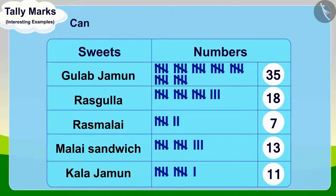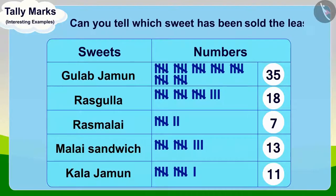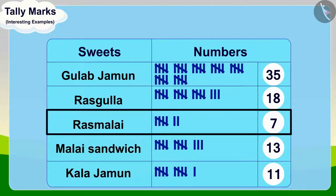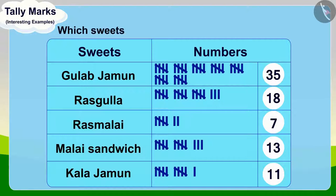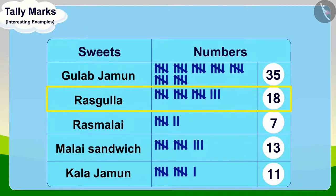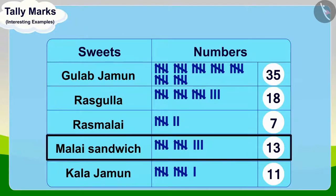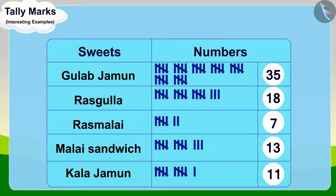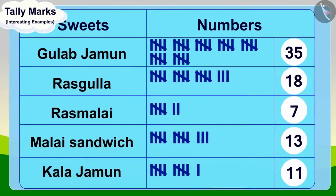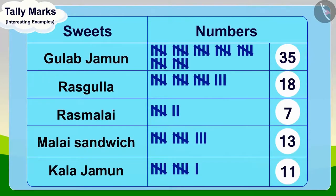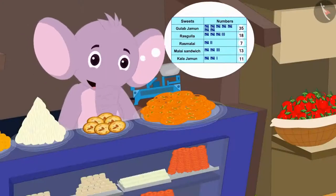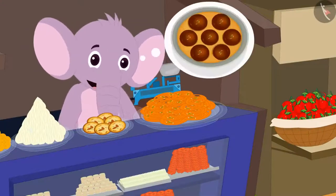Children, can you tell which sweet has been sold the least? That's correct — Rasgullahs have been sold the least. And which sweets sold more than Malai sandwich? Yes, Rasgullahs and Gulab Jamuns were sold more than Malai sandwich. Appu was very happy to get this information using tally marks, and because Gulab Jamuns were sold the most, he decided to make more of them the next day.